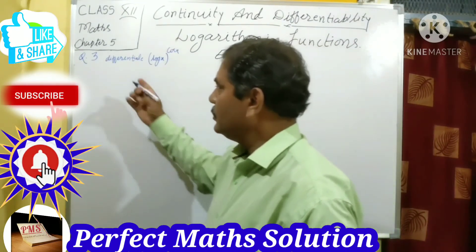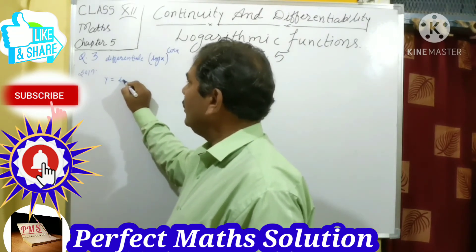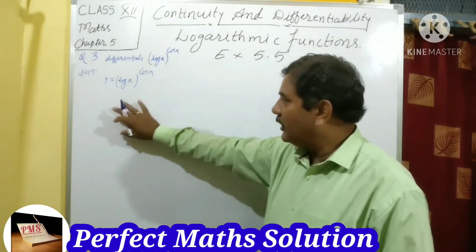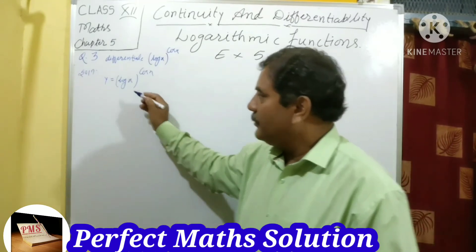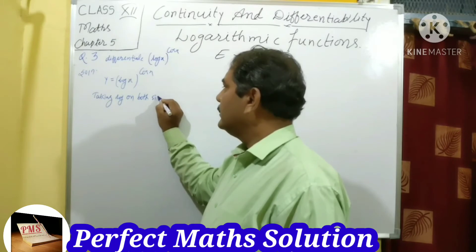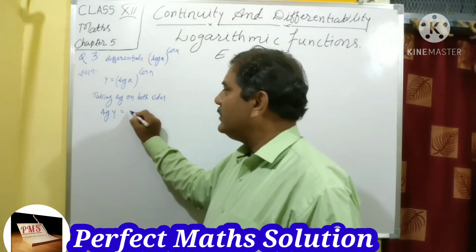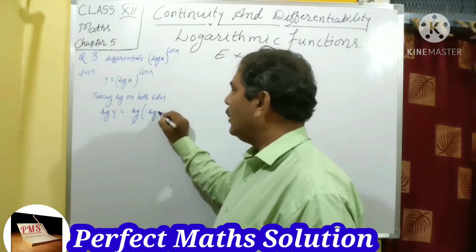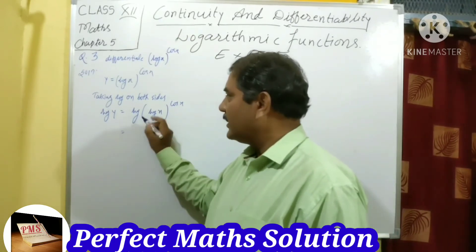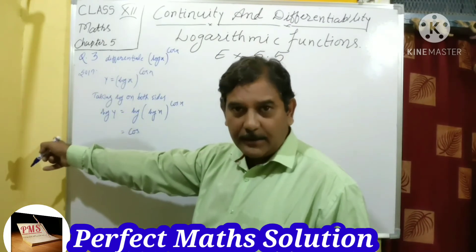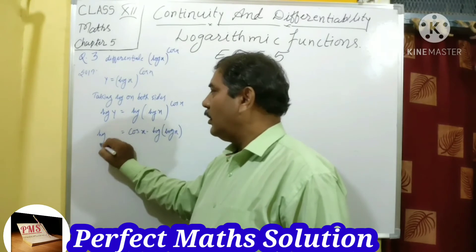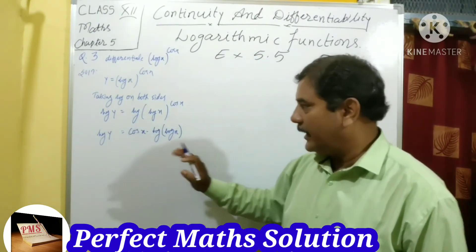Now question number 3: differentiate (log x)^cos x. Taking the solution: y equals (log x)^cos x. Taking log on both sides: log y equals log of (log x)^cos x.